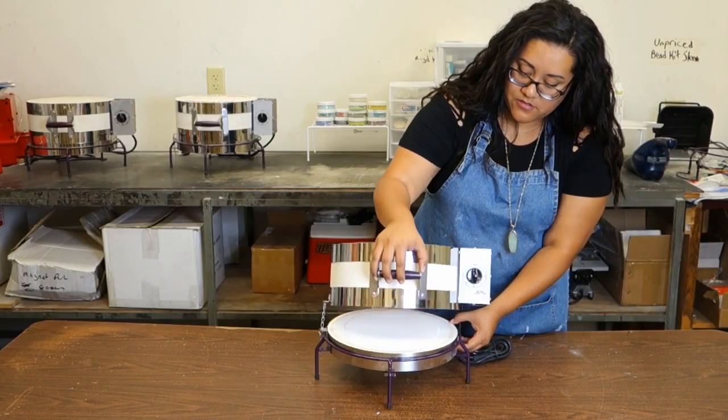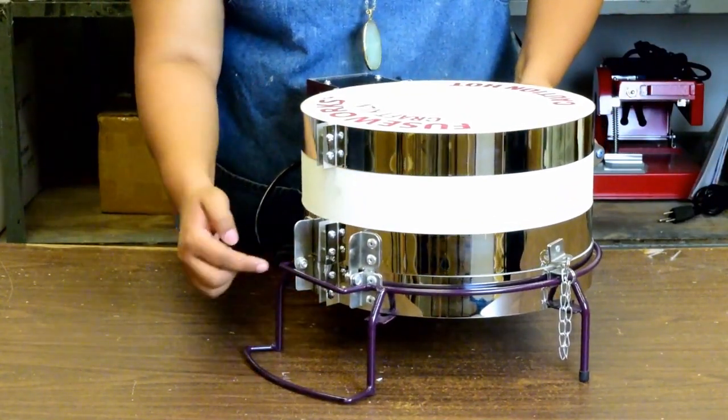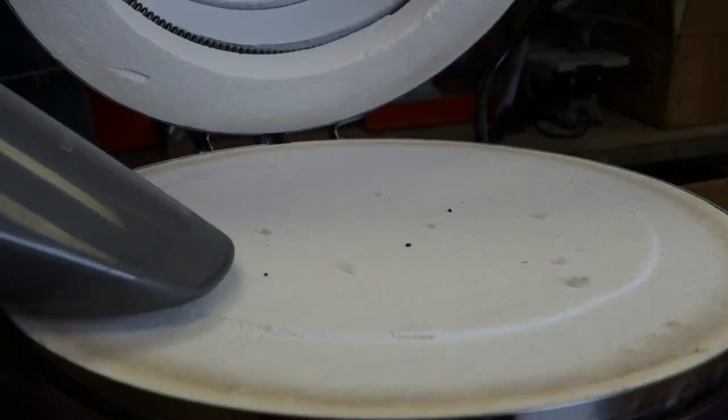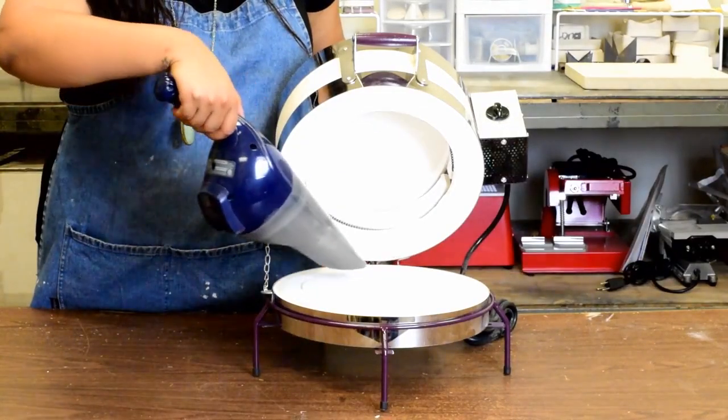If you feel the lid is too tight or loose when opening, you can adjust the tension using the bolts on the back hinge of the kiln. Then vacuum out the inside of your kiln to get rid of any debris that may be left from the packaging during transportation.